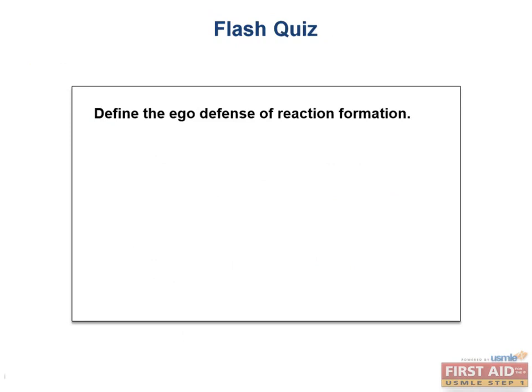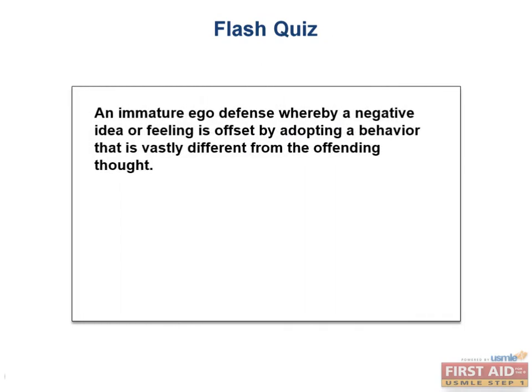Flash quiz: Define the ego defense of reaction formation. Reaction formation is an immature ego defense whereby a negative idea or feeling is offset by adopting a behavior that is vastly different from the offending thought. Remember, reaction formation is best characterized by the emphasis on the opposite. The newly adopted behavior will be so vastly different from the offending thought that it may even go against one's value system.